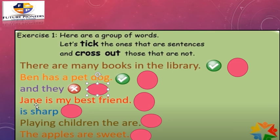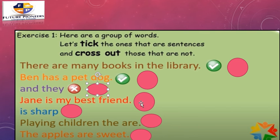What about: Jane is my best friend? Does it give you a complete thought? Yes — this is a sentence. The J in Jane is capital and we have a period. Jane is the subject and 'is' is the verb. This is a sentence — let's put a tick.